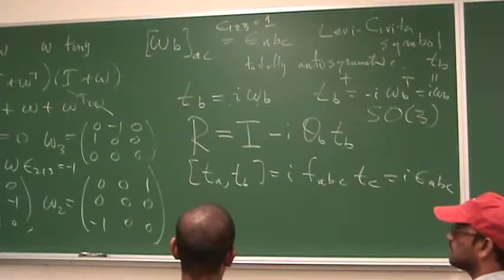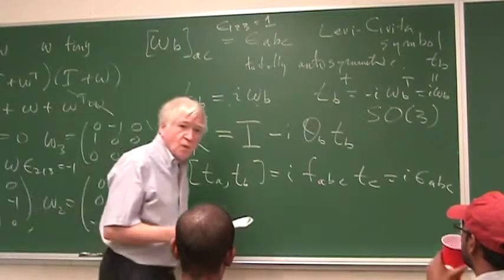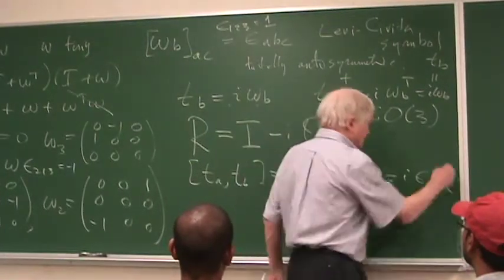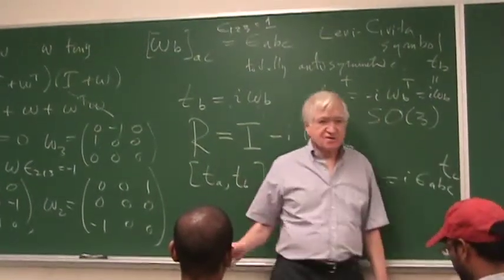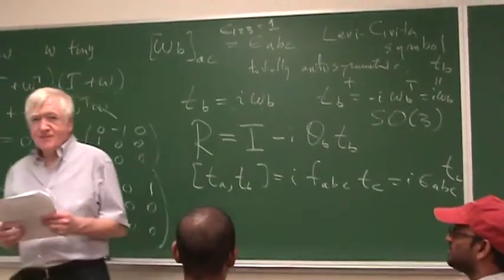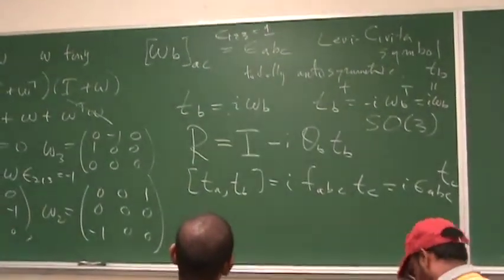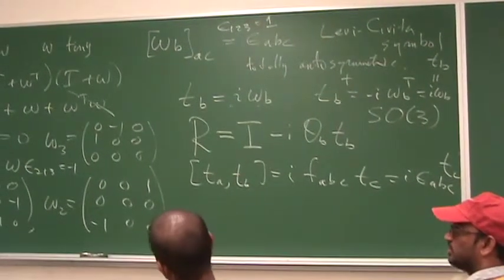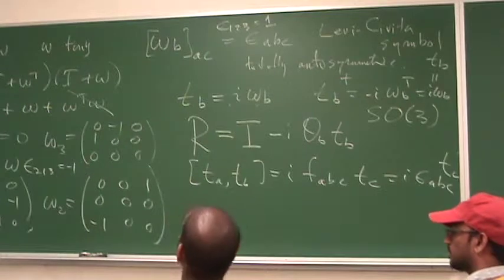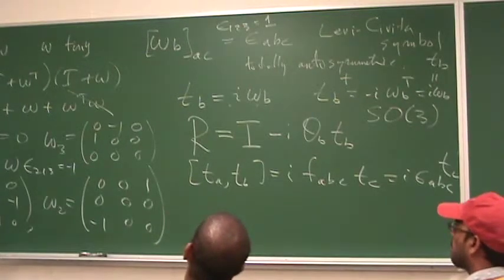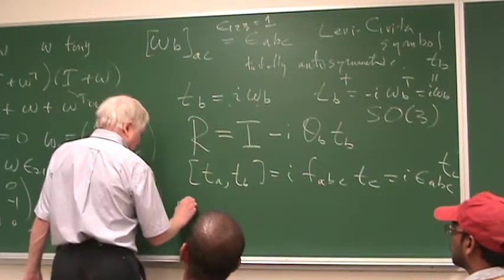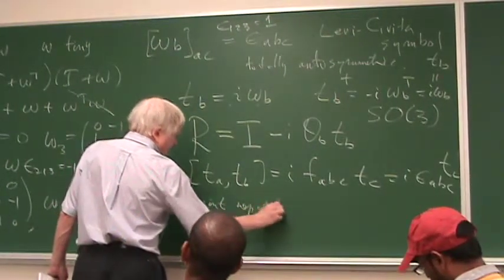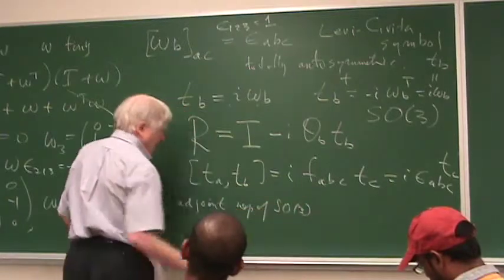Okay. That last line you wrote, the one with the I epsilon ABC, yes, good point. This turns out to be what's called the adjoint representation of SO3, and I'll say more about that on Monday.